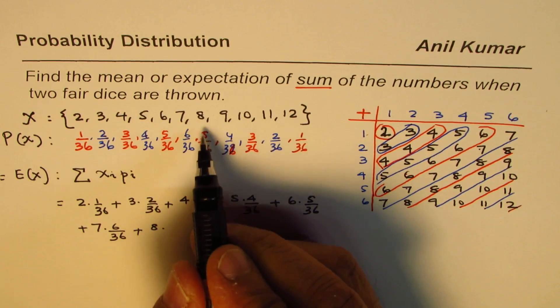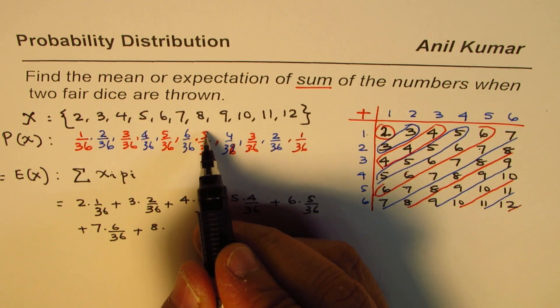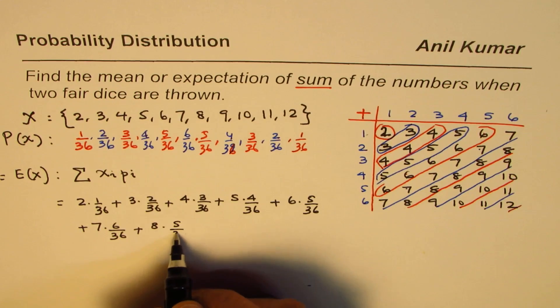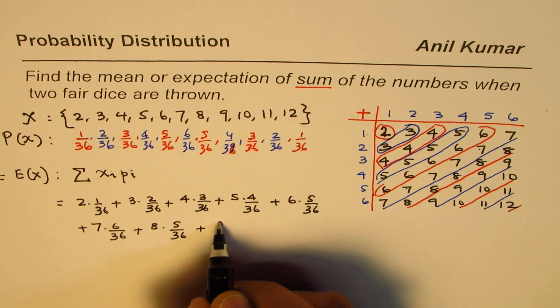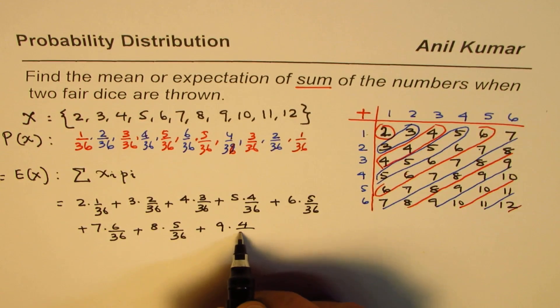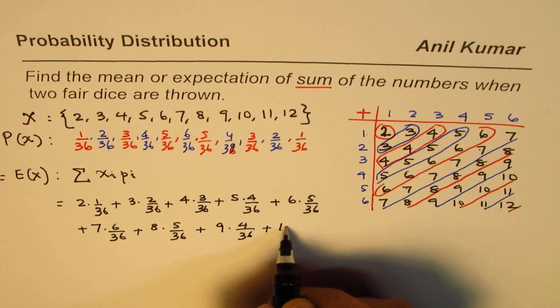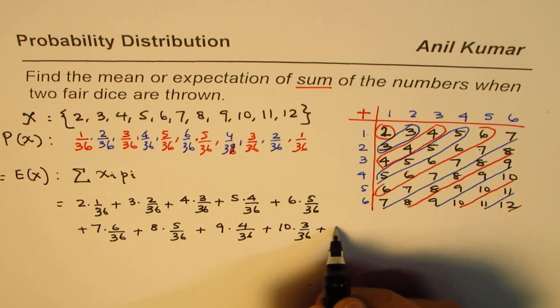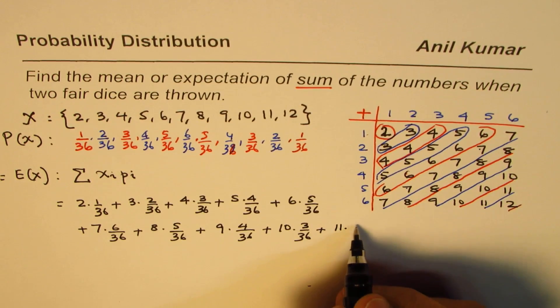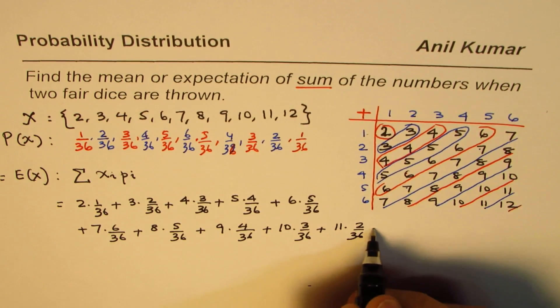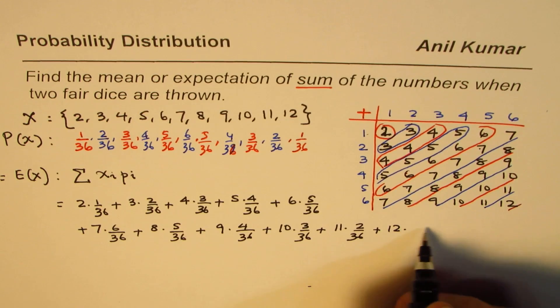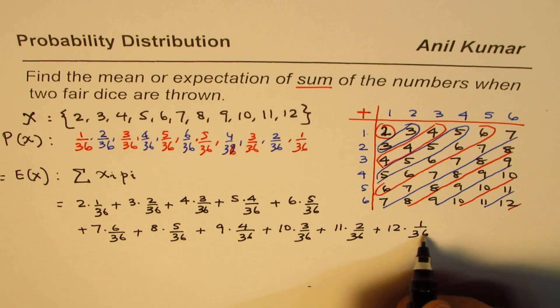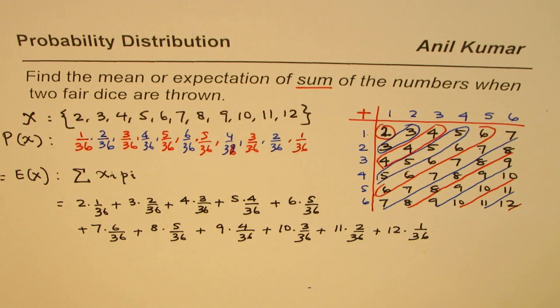Plus 7 times 6/36 plus 8 times 5/36 - now this number starts decreasing - plus 9 times 4/36 plus 10 times 3/36 plus 11 times 2/36 plus 12 times 1/36.